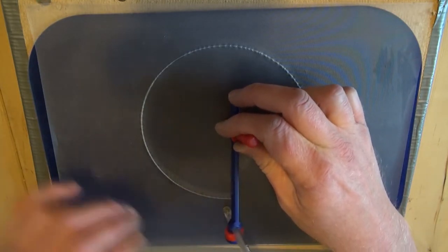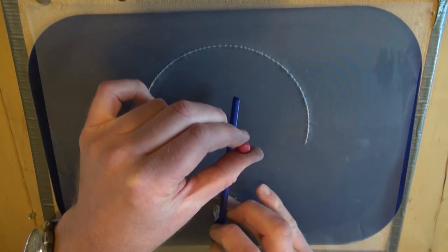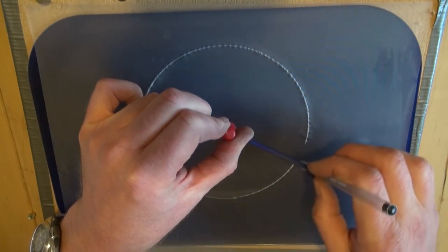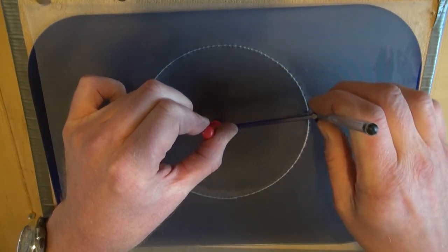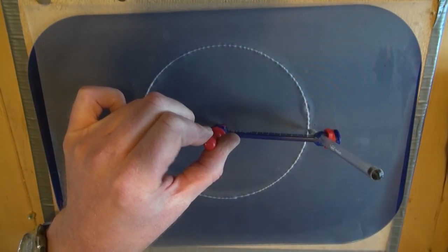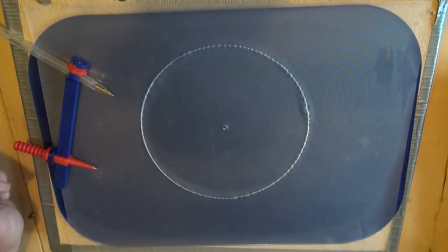So keep hold of the pointy bit. Change hands. Pick it up again. Off you go. And they'll sort of know when they've completed. And that is how to draw a circle using a compass.